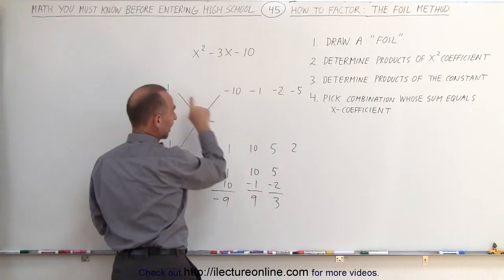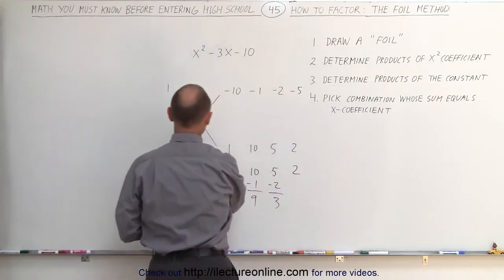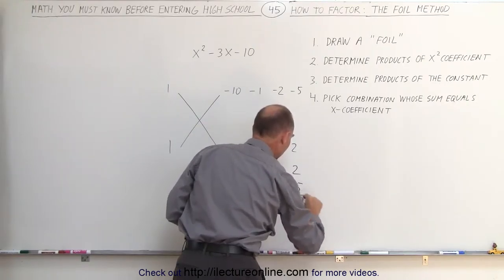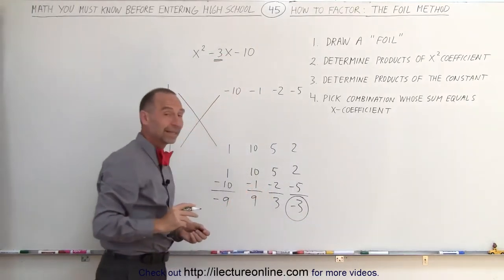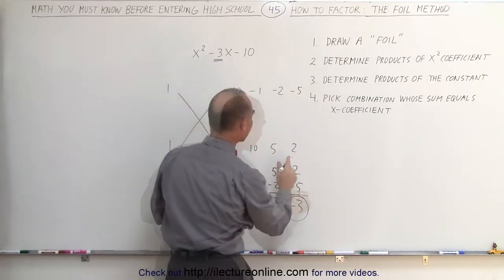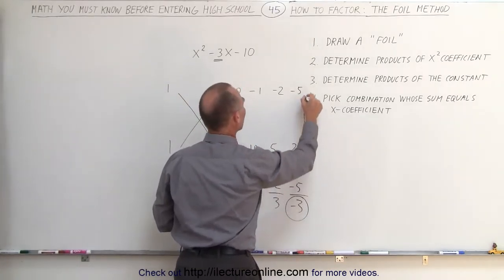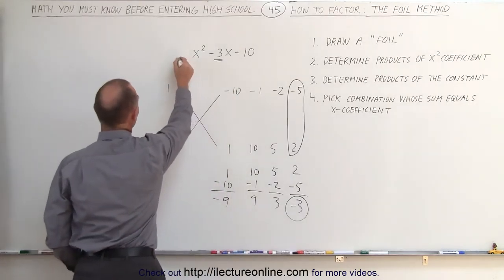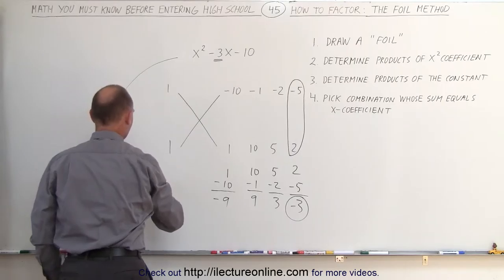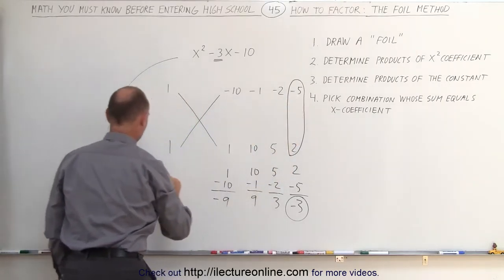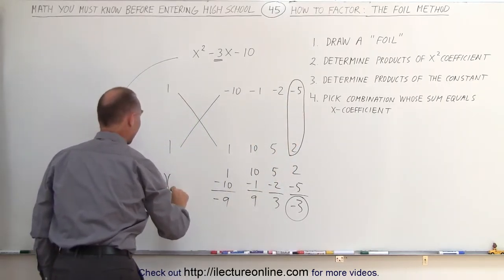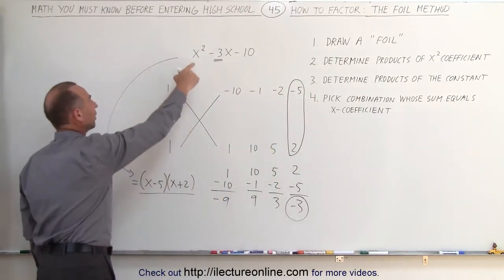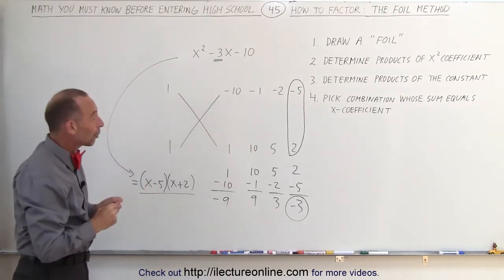Next, we multiply 1 times 2 and 1 times negative 5. When I add those two together, I get a negative 3, which is the same as the middle term over there. That means I have the right combination numbers, which is I have a negative 5 and a positive 2. Which means that this in factored form can be written as x minus 5 times x plus 2. And that's the factored form of this trinomial. So that's how the FOIL method works.